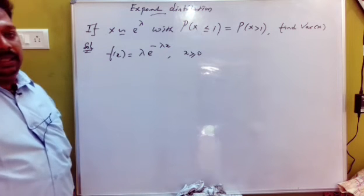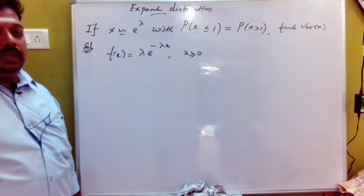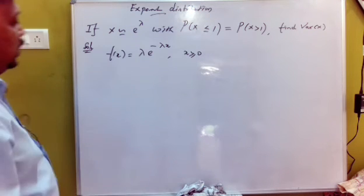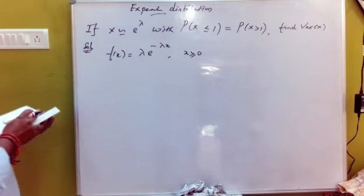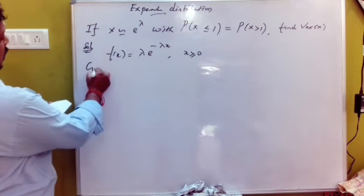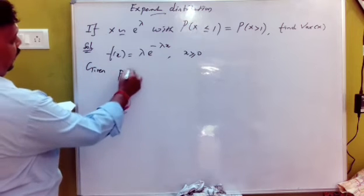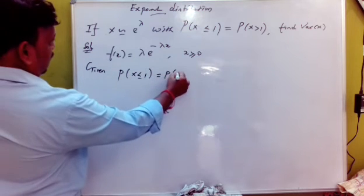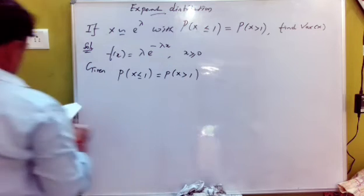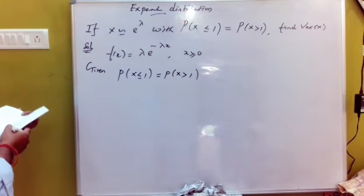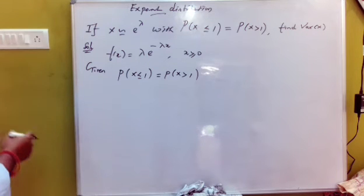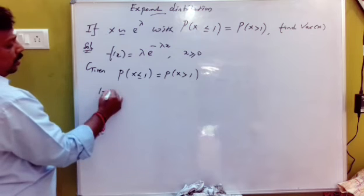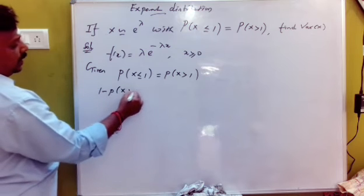For the Poisson distribution, e to the power minus lambda, lambda to the power x — where mean equals variance. Now for the exponential distribution problem: find P(X less than or equal to 1) and P(X greater than or equal to 1).